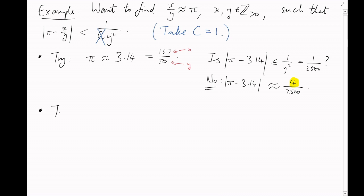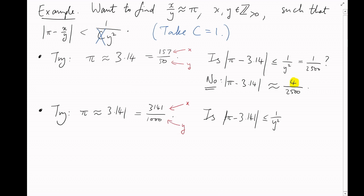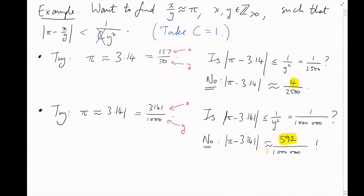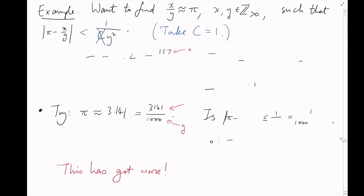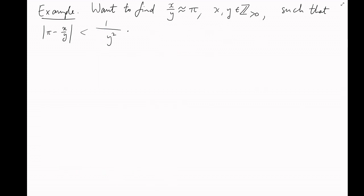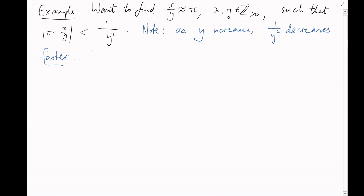Why did our approximation get worse even when we got closer to π? The problem is that the bound 1/y² depends on the denominator y. As the denominator increases, the allowed deviation decreases even faster. Intuitively, this means we want to get close to the true value of π, but we care more about doing it efficiently — using values for x and y that are as small as possible.